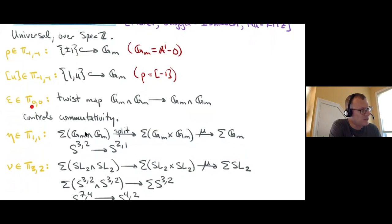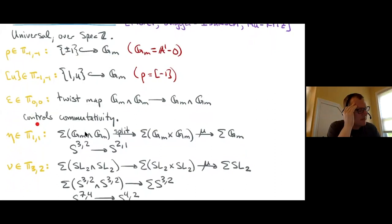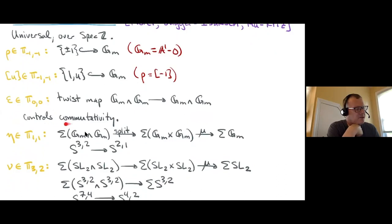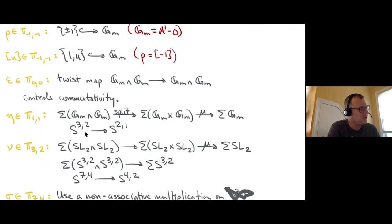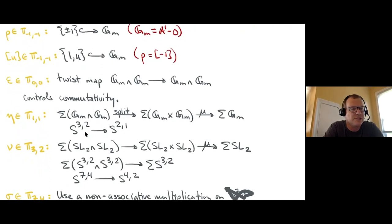Then there's epsilon in π_{0,0}: the twist map on G_m ∧ G_m, swapping the factors. The relative degree there is (0,0), and because it's a twist map, epsilon controls commutativity — we'll write down a formula for that in a moment. Now things get more interesting. Borrowing an idea from classical topology going back to Hopf, we can construct a Hopf map eta in π_{1,1}.